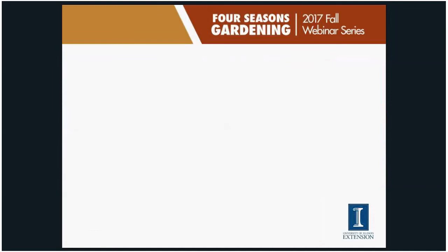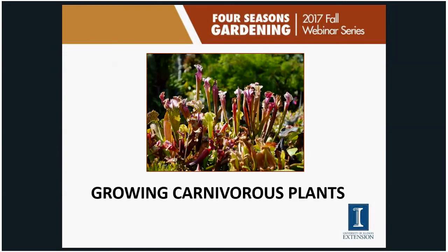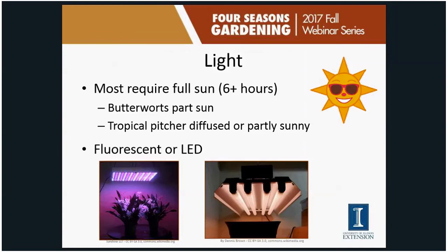Now for cultivation. For light, carnivorous plants need at least six or more hours of full sun. Butterworts can get away with partial sun, and tropical pitcher plants can manage with diffuse or partly sunny conditions. For indoor growing, place plants on an east, southeast, west, or southwest-facing windowsill, or use fluorescent T5 or LED lights. T5 fluorescents produce higher output than the T8 or T12 fixtures typical in homes, and LEDs are becoming increasingly cost-effective.